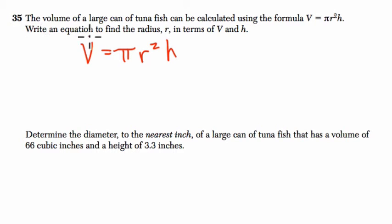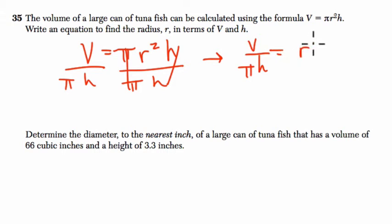They want us to find the equation to find the radius r in terms of V and h. In other words, get r all by itself. We do this in two steps. First, divide by π and h. We're multiplying by π and h, so we can divide by π and h to cancel them out. So now, V divided by πh equals r squared.